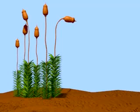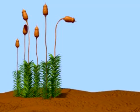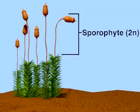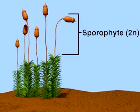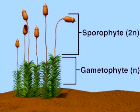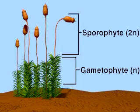Mosses alternate between the haploid gametophyte and the diploid sporophyte during their life cycle. The sporophyte generation in bryophytes develops from the gametophyte. Sporophytes receive much of their nutrition from the gametophyte.